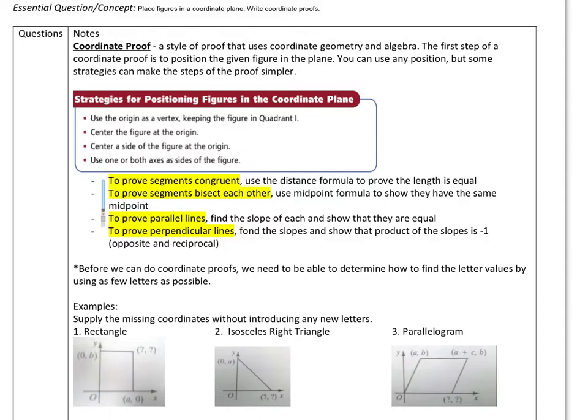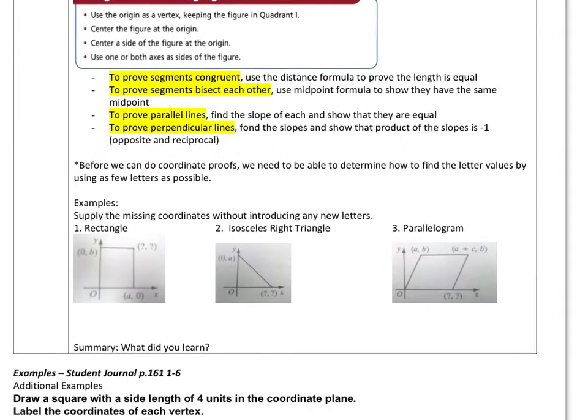And then, as far as proving, to prove segments congruent, we've got to use the distance formula. To prove segments bisect each other, use the midpoint formula to show that they have the same midpoint. To prove parallel lines, obviously you're going to have to find the slope of each and show that they're equal. And to prove perpendicular lines, you want to find the slopes and show that they are opposite reciprocal, or that they multiply to be negative one.